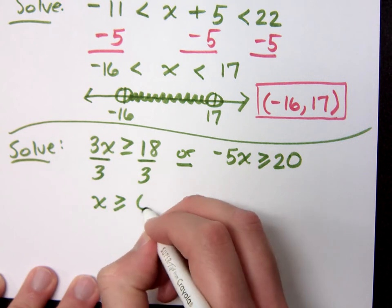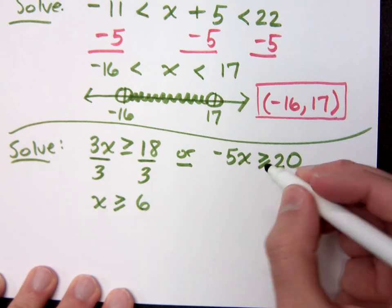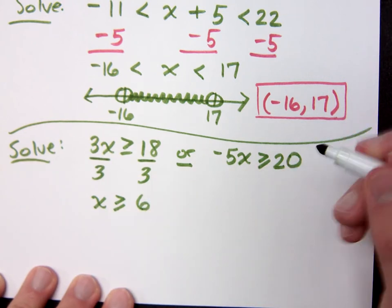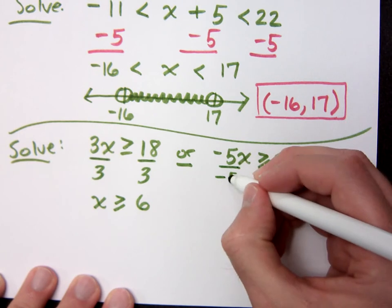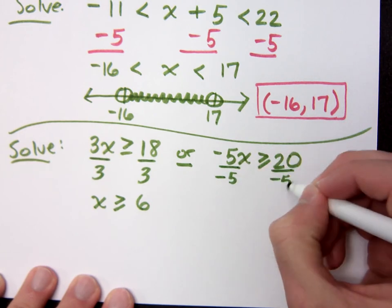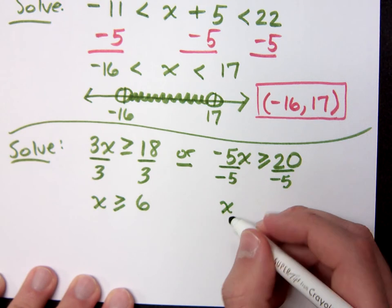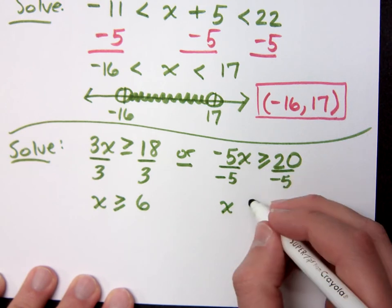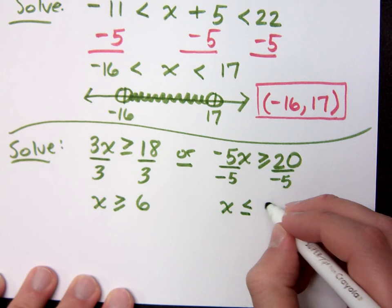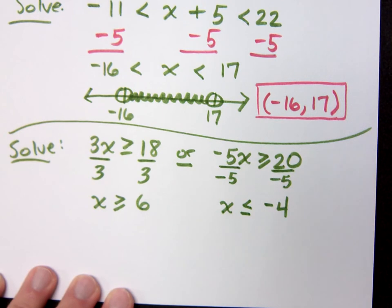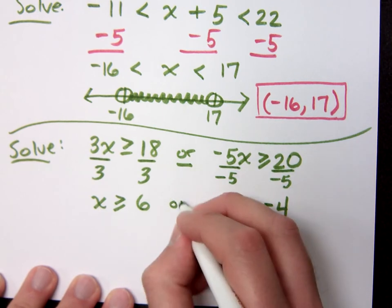Greater than or equal to 6. Over here, I'm going to do what? Divide by negative 5. Why am I going to flip the sign, Edwin? Divide by negative, so it's going to become less than or equal to negative 4.